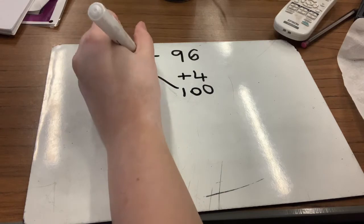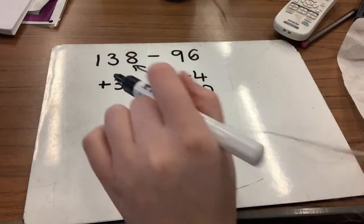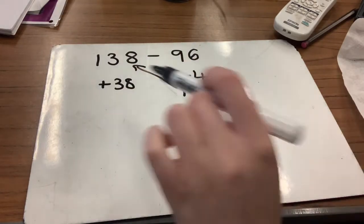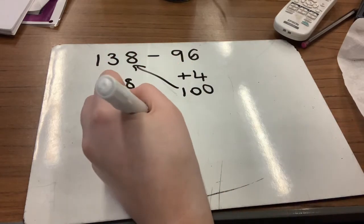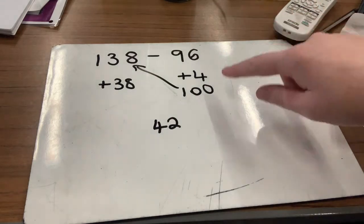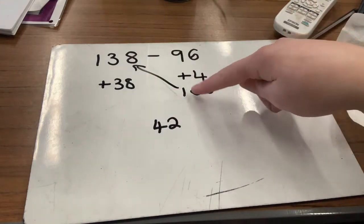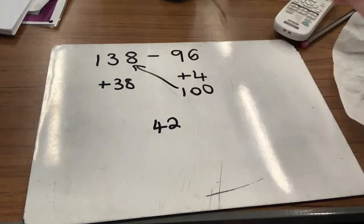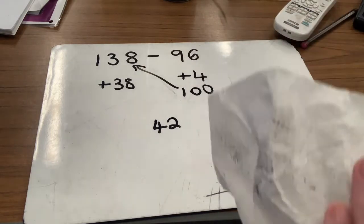So that's how I got from 100 up to 138. And then I know that I added on four and I added on 38, so I'll pop those together to make 42. So that's how we would do it. Nothing has changed apart from the fact last week we were already starting with the 10, rather than having to do that first little step. But other than that, it's exactly the same.